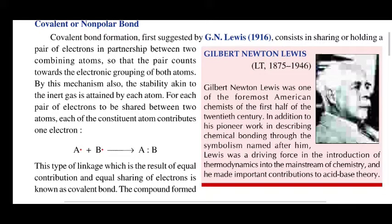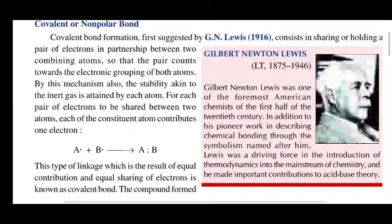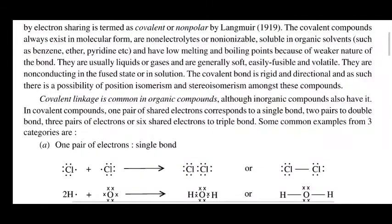The two electrons are shared in the outer shell, making the outer shell complete. The two atoms thus become stable. This kind of linkage, which results in equal contribution and equal sharing of electrons, is known as a covalent bond. Covalent bonds form the same types of molecules.